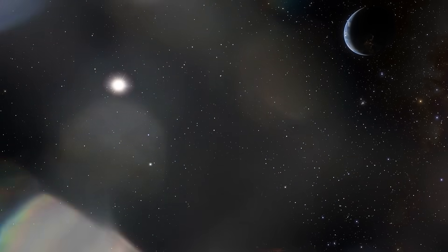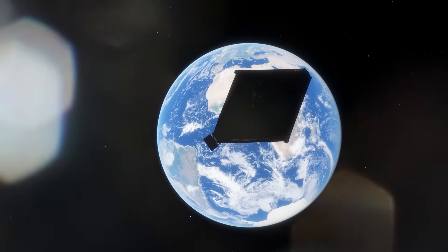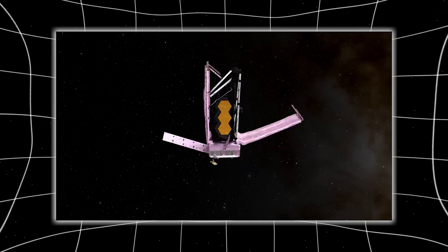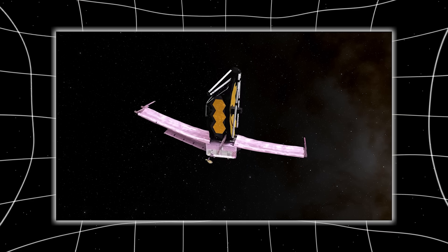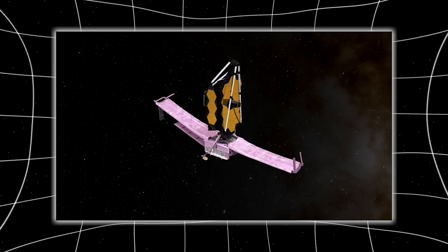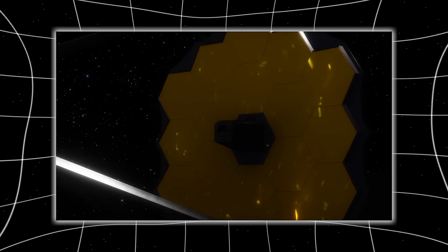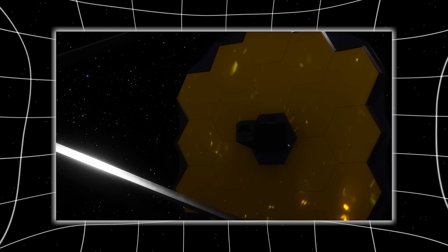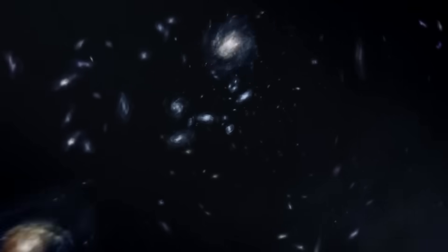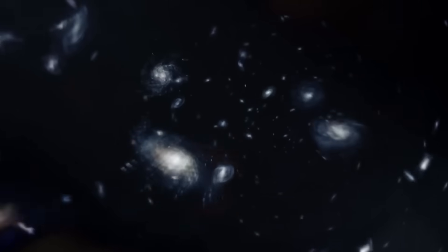The James Webb Space Telescope wasn't built to casually look around. It was built like a time machine, crafted to peel back the layers of the universe and let us peer into the very beginnings of existence. When it turned toward a seemingly unremarkable patch of space, it detected something bizarre, a brilliant point of light that stood out like a lighthouse in a storm. At first, astronomers assumed it must be relatively close, given how intensely it glowed.